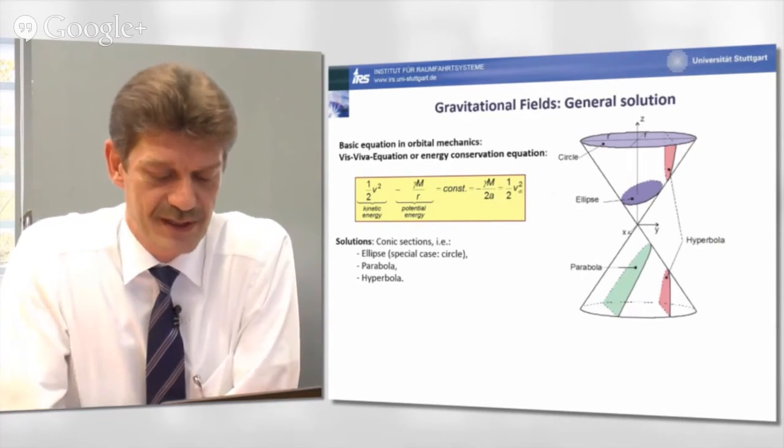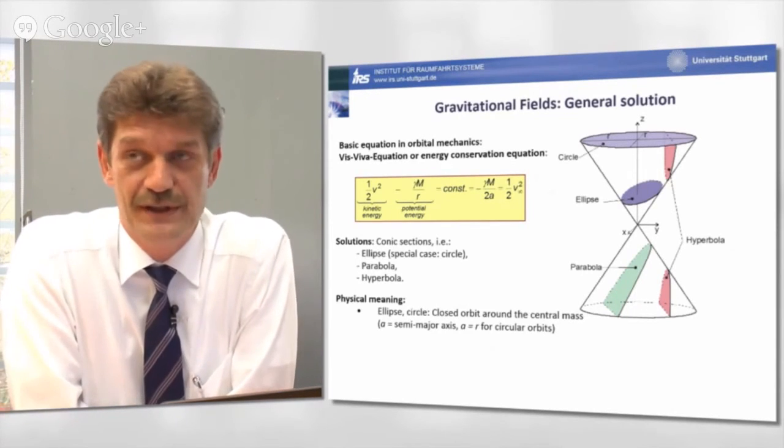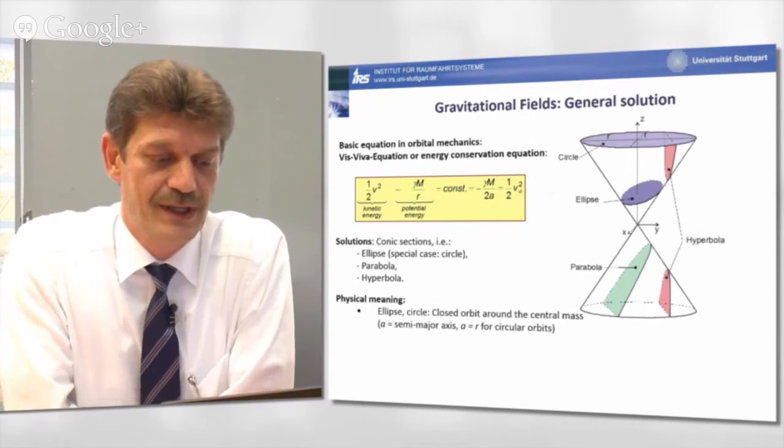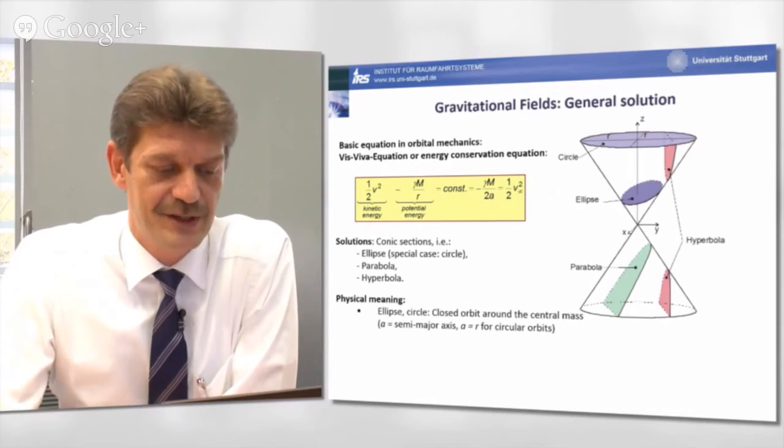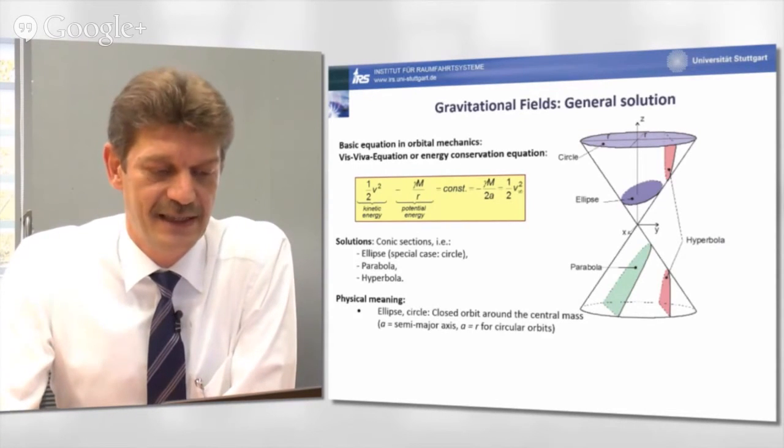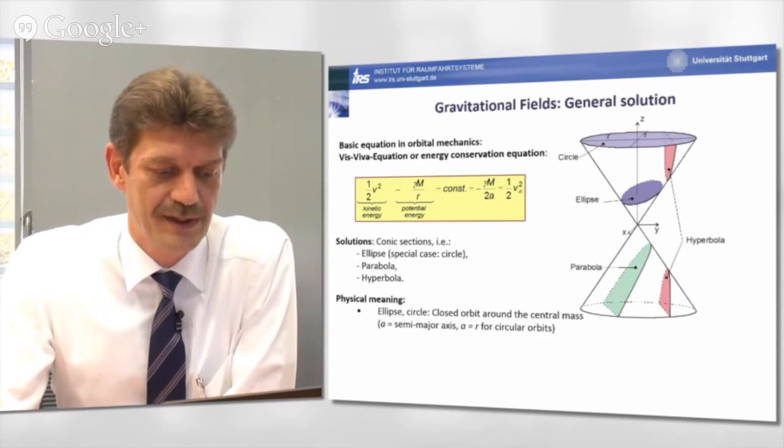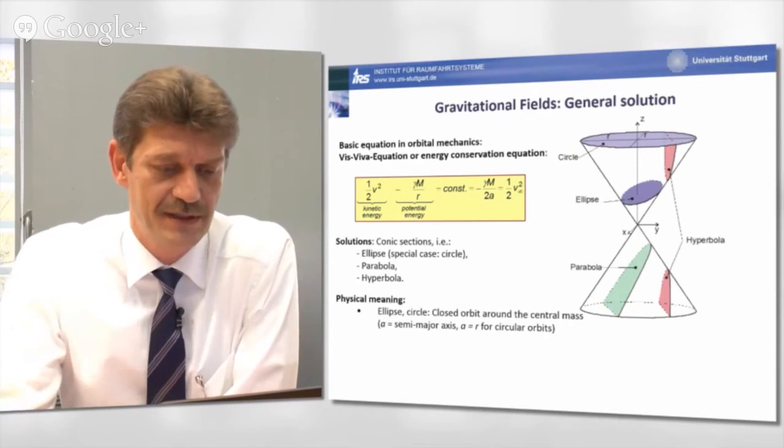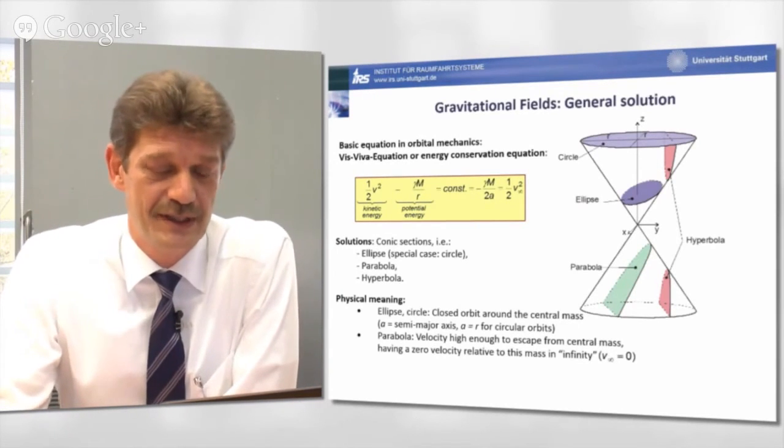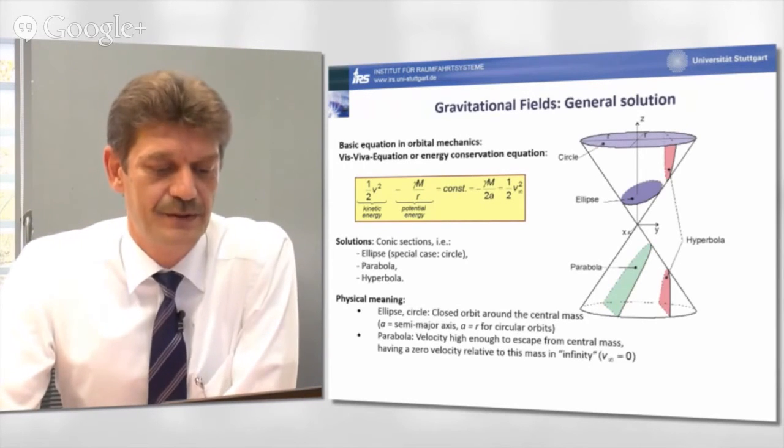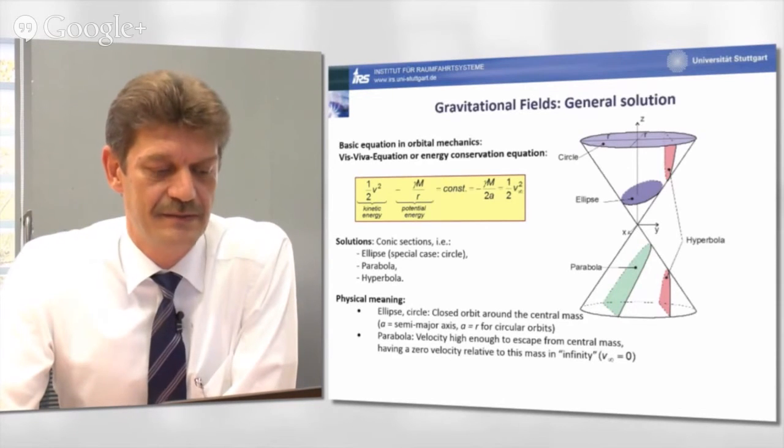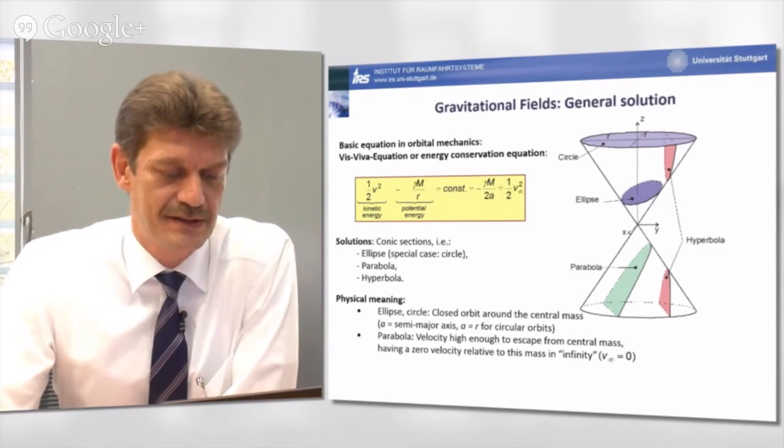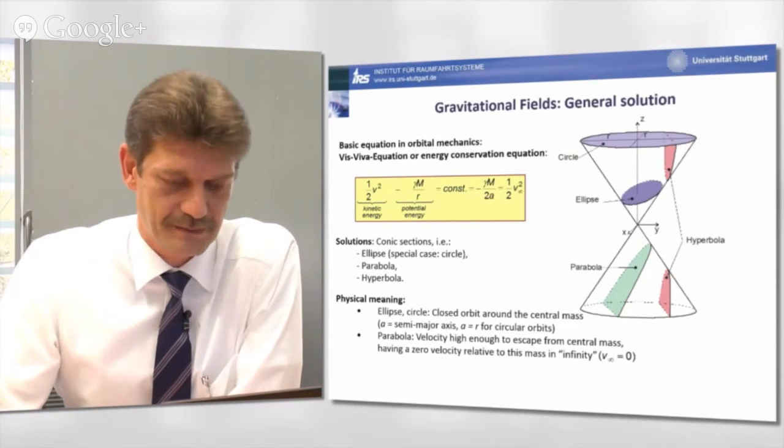This is a mathematical solution. The physical meaning is nothing else than an ellipse or a circle in a certain special case. It's nothing else than a closed orbit around the central mass, with a, by the way, in this equation being the semi-major axis, or for a circular orbit, a equaling the radius, the distance of the orbiting object to the center of the Earth's mass in our particular case. A parabolic orbit would then be an orbit which has, at a certain distance r, a velocity high enough to escape from the central mass, which means it has zero velocity relative to this mass in infinity.